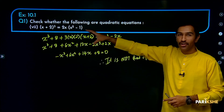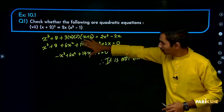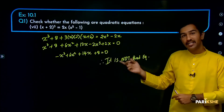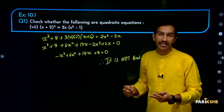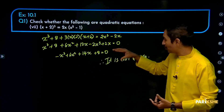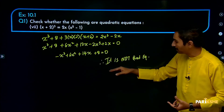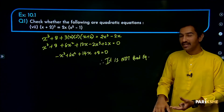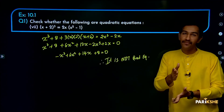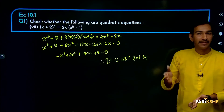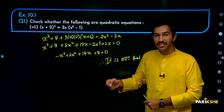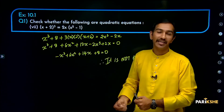Is this a quadratic equation or not? It is not a quadratic equation. The reason is: because the obtained equation is not in the form of ax squared plus bx plus c is equal to 0, where a is not equal to 0. That is why it is not a quadratic equation.